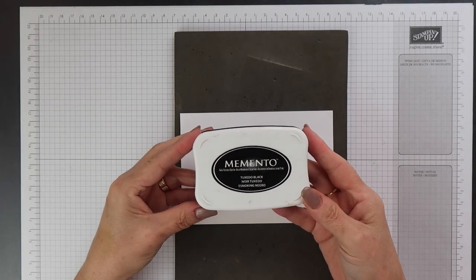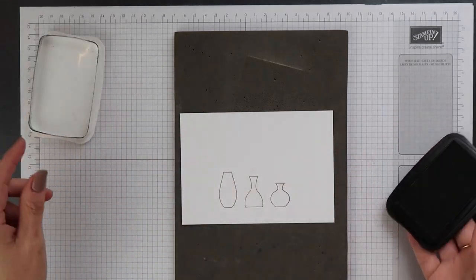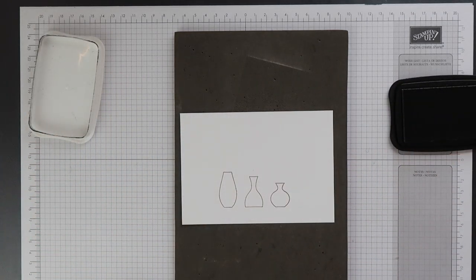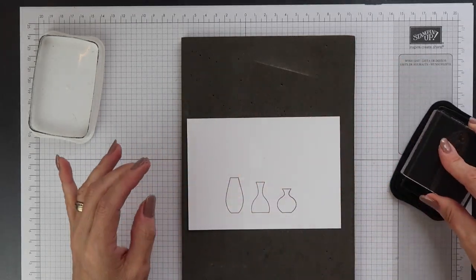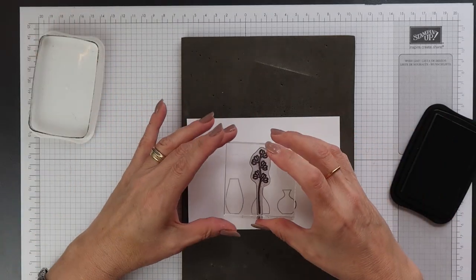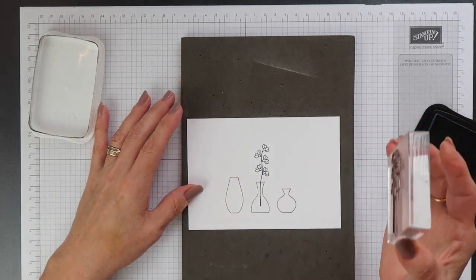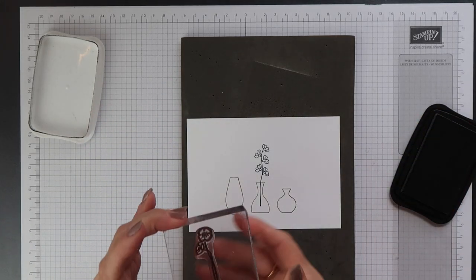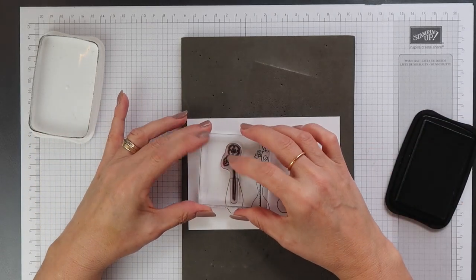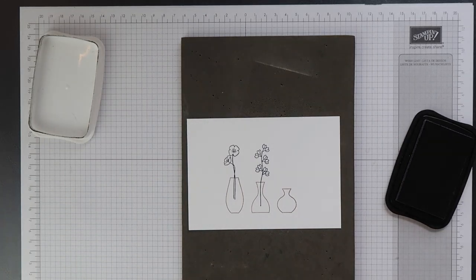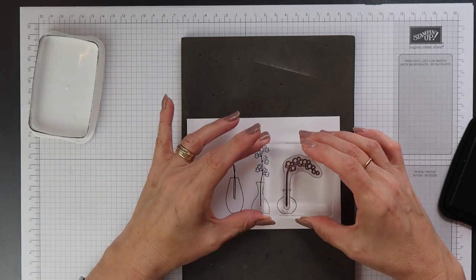I'm using Memento Tuxedo Black ink to stamp my flowers because I want to colour them using the Stampin' Blends alcohol markers. I'm using my stamping piercing mat underneath the cardstock here. Now the reason I'm doing that is because I'm using photopolymer stamps. Now obviously with photopolymer you haven't got that foam cushion in between the photopolymer and the block. So to compensate for that I use the piercing mat underneath. And you get a much better stamped impression for your image when you do this.